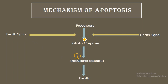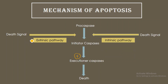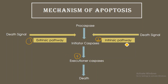This death signal can activate the initiator caspase either by the extrinsic pathway or by the intrinsic pathway — so there are two pathways of apoptosis. Although these two pathways are entirely different from each other, consisting of different sets of proteins and different events, the end result is the same: both pathways cause the activation of the initiator caspase. From that point, the pathway is common to both.